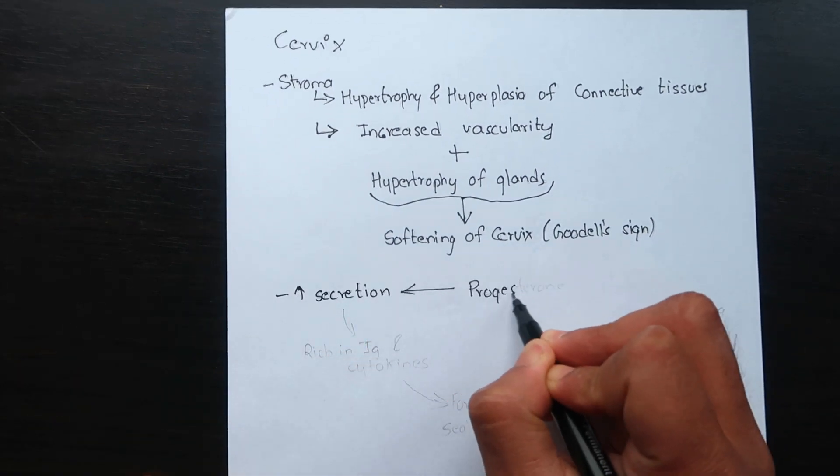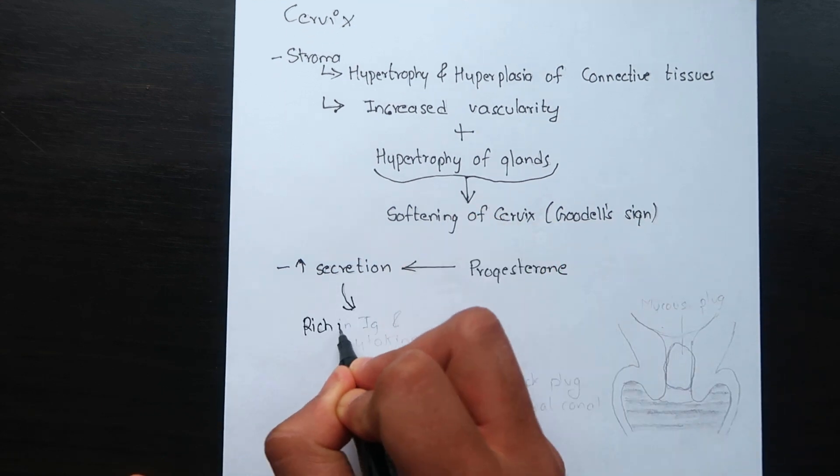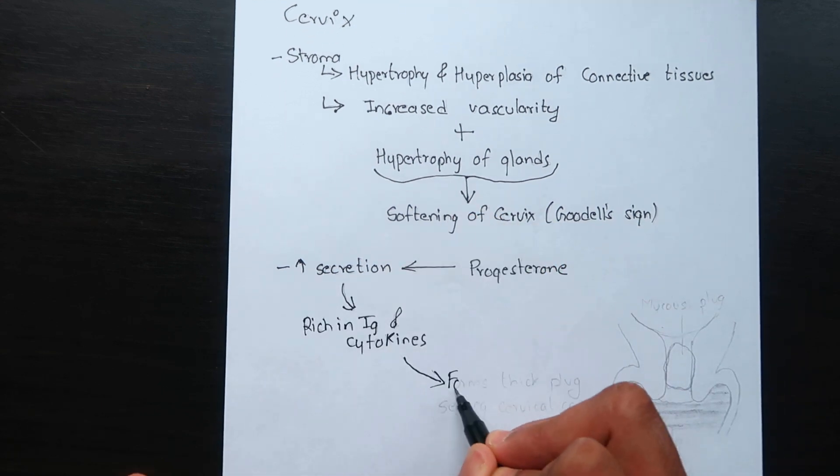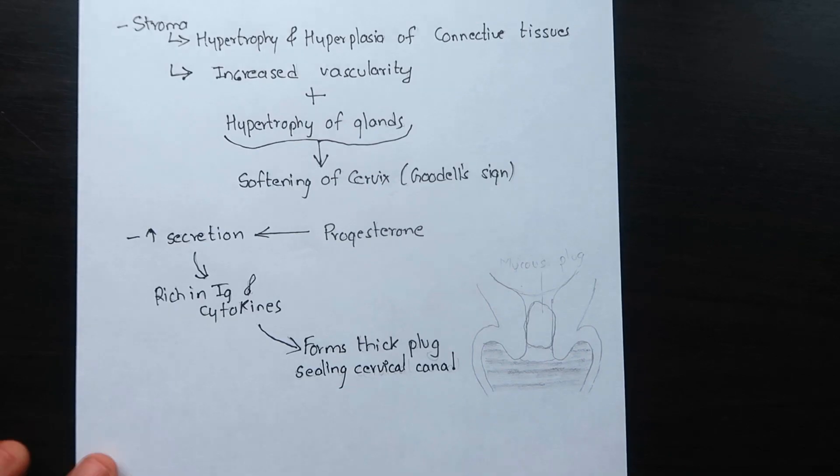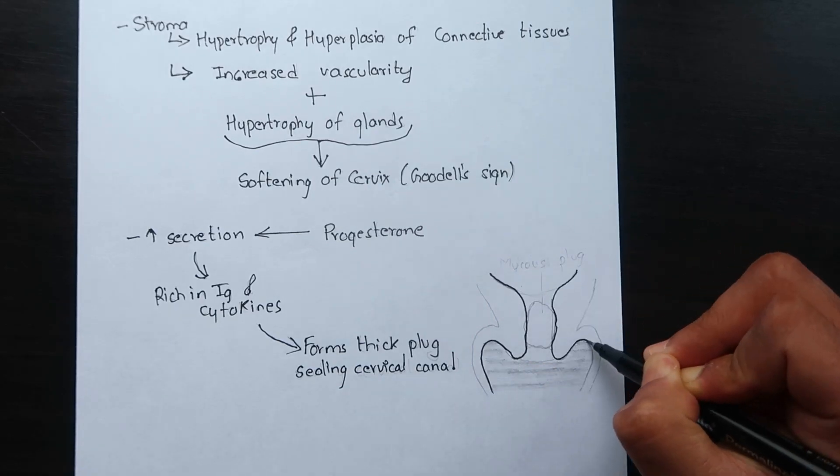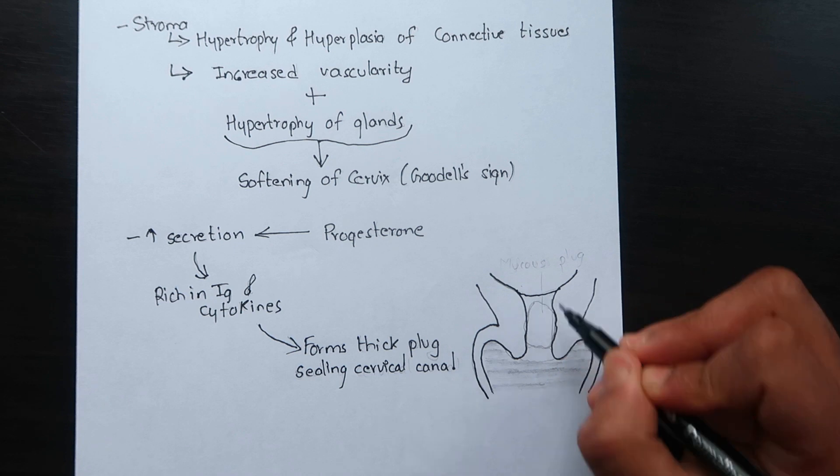The secretion is copious and this is due to the effect of progesterone. The mucus is rich in immunoglobulins and cytokines and forms a thick plug effectively sealing the cervical canal.